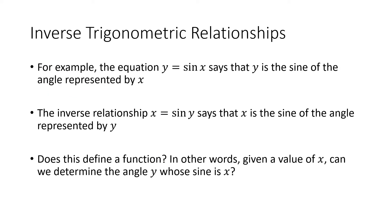If we had y equals sine of x, that says y is the sine of the angle represented by x. But if we reverse that and write x equals the sine of y, then the roles of x and y have been switched — instead of x being the angle, now y is the angle and x is the sine of that angle. The question we want to ask is: does that define a function? In other words, if we knew the value of x, can we determine the angle y whose sine is x?